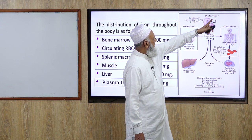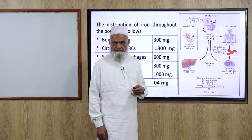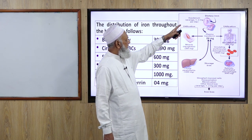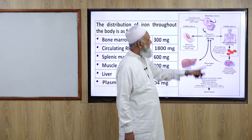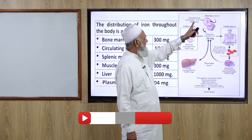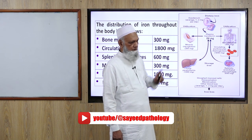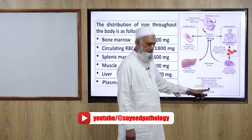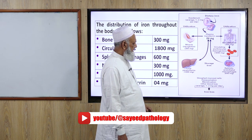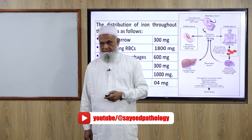Daily dietary iron intake averages 1 to 2 mg absorbed from the duodenum. Iron loss averages 1 to 2 mg per day. This way iron is balanced over time.